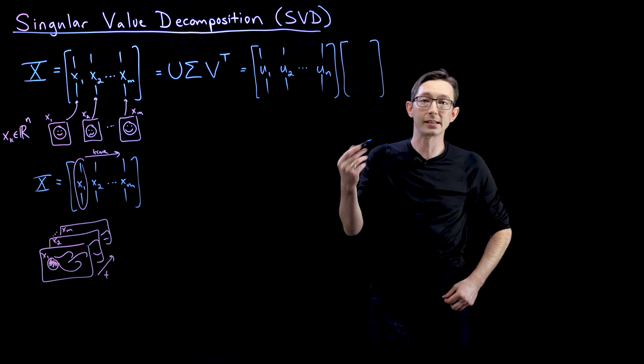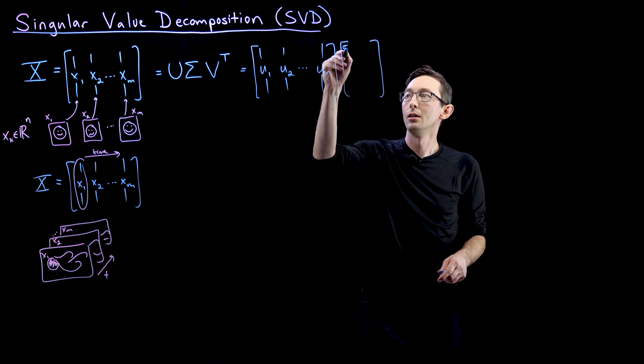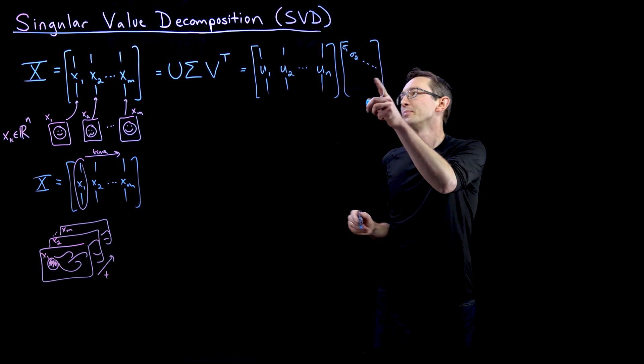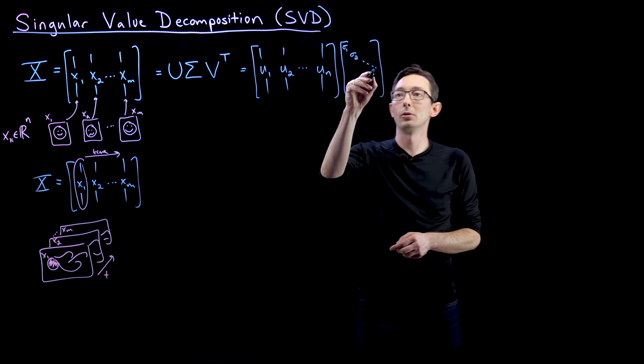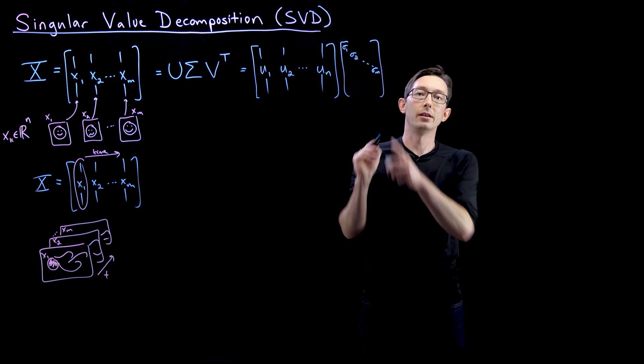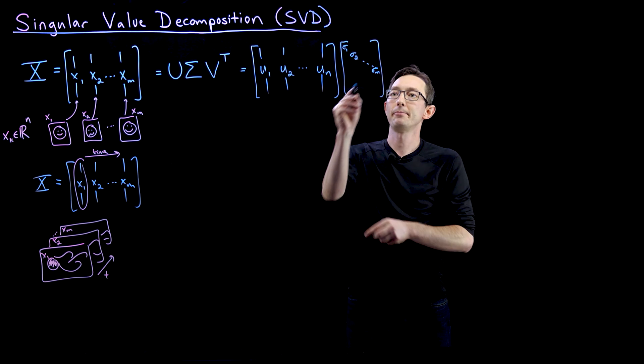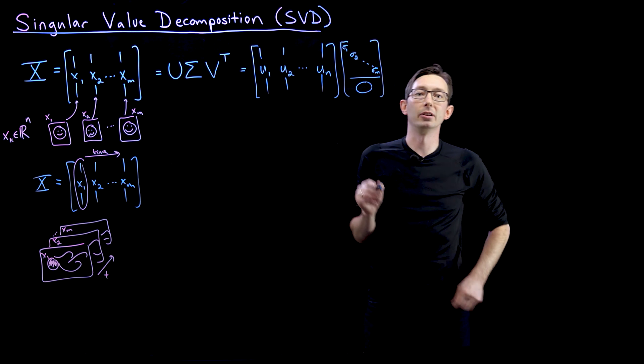And the sigma matrix is diagonal. So I have sigma one, sigma two, dot dot dot. Now, because there are only M columns of X, there will only be M non-zero singular values, and everything else below will be zero.